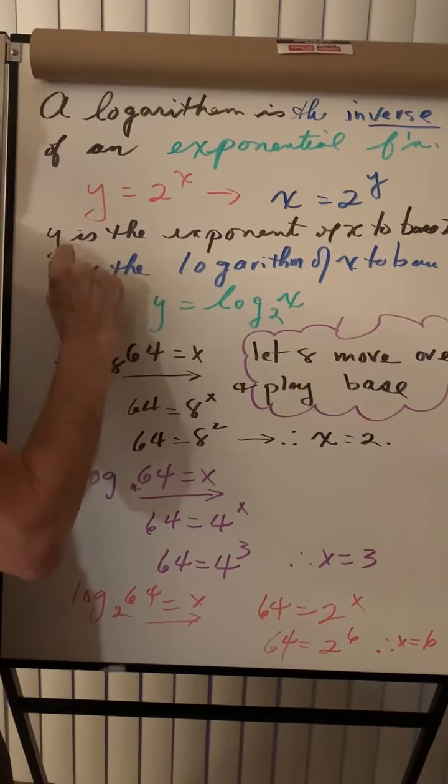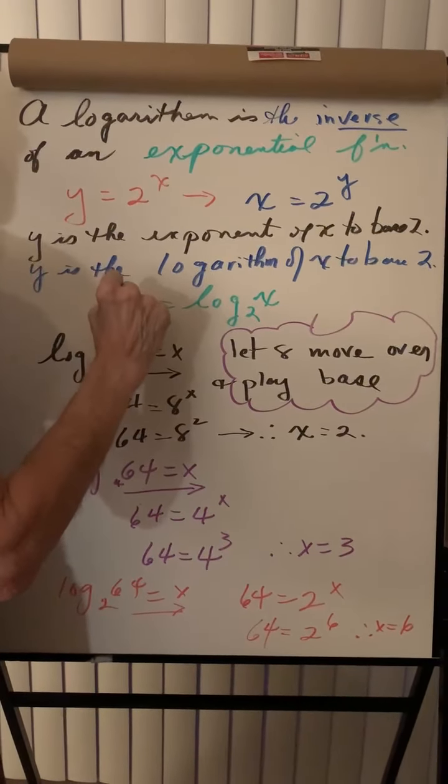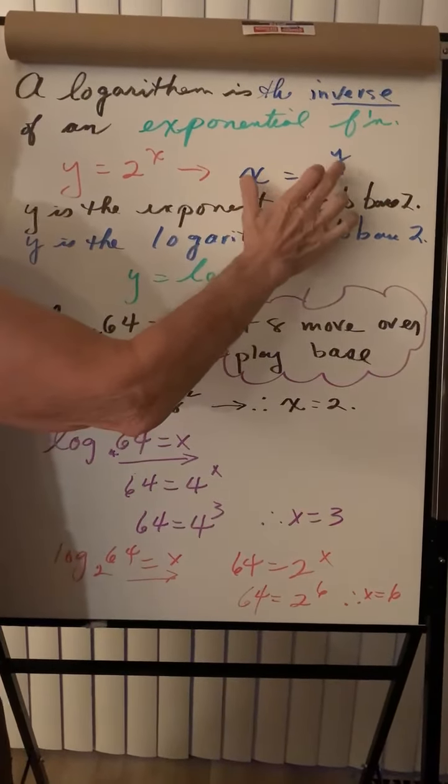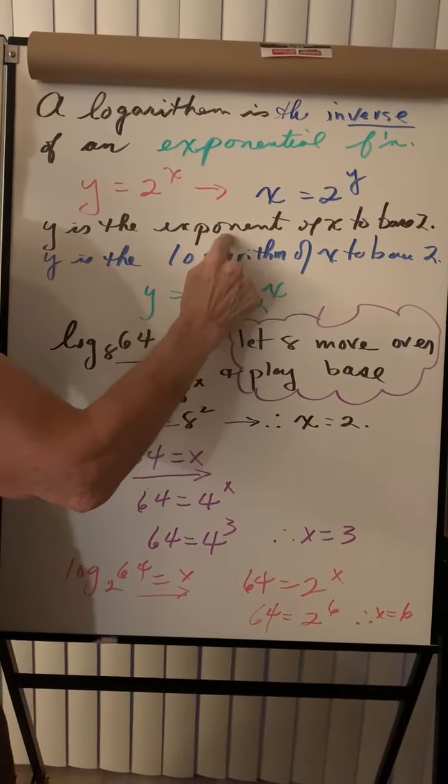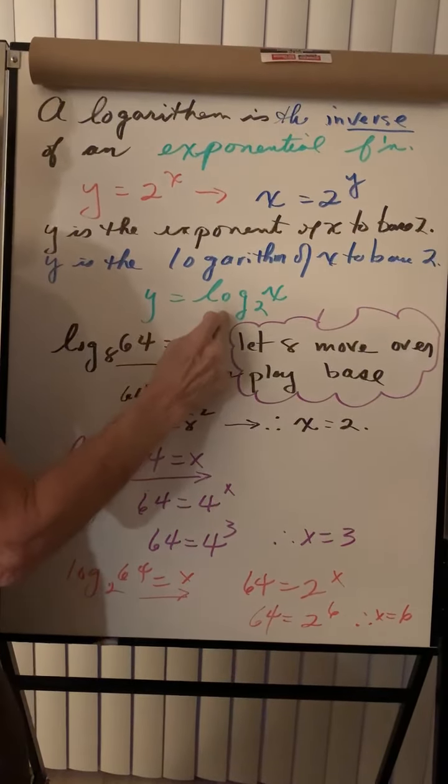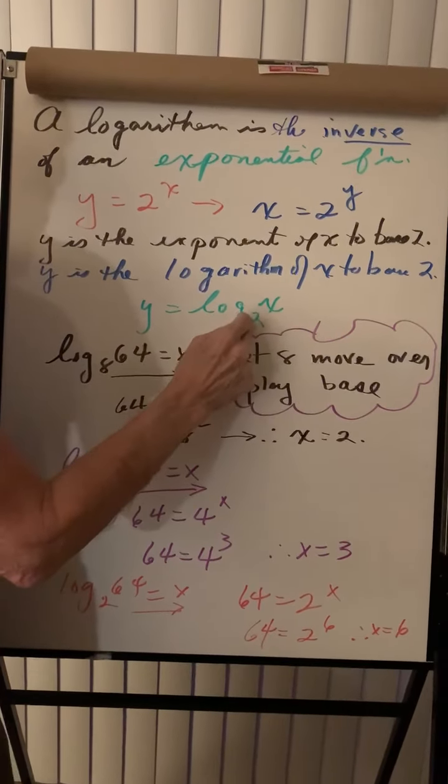So we say that y is the exponent of x to the base 2, or y is the logarithm of x to the base 2. Interchange these two words. We write it like this: y is the log of x to the base 2.